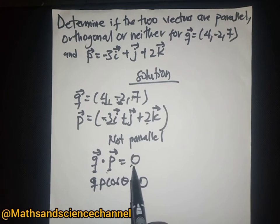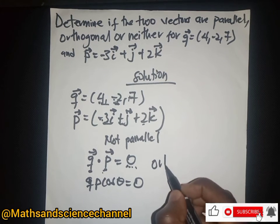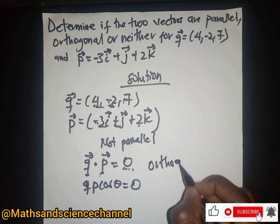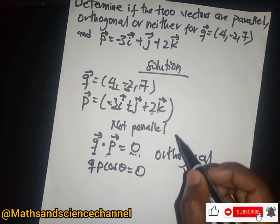Because their dot product is equal to zero, for any two vectors having dot product equal to zero, we can conclude that they are orthogonal. They are orthogonal and not parallel.